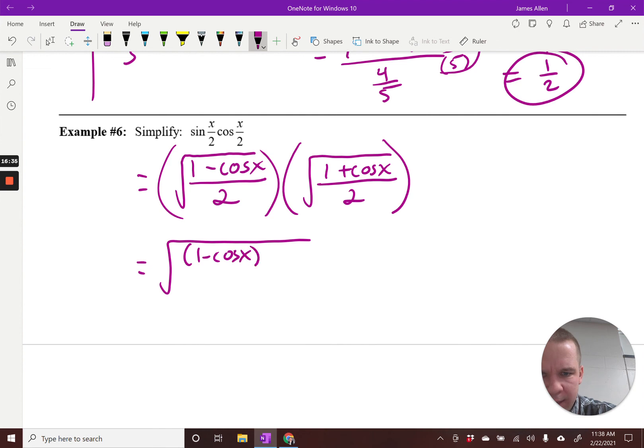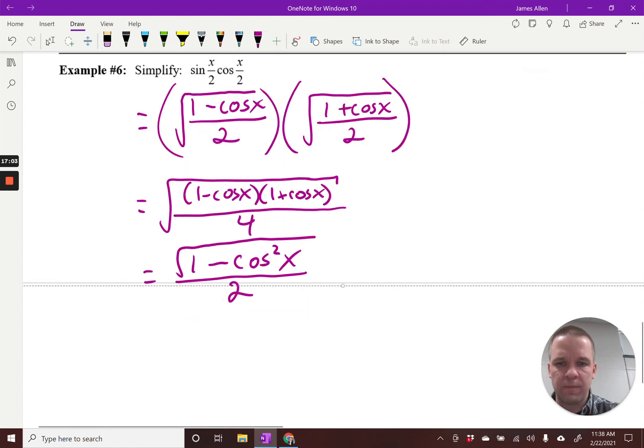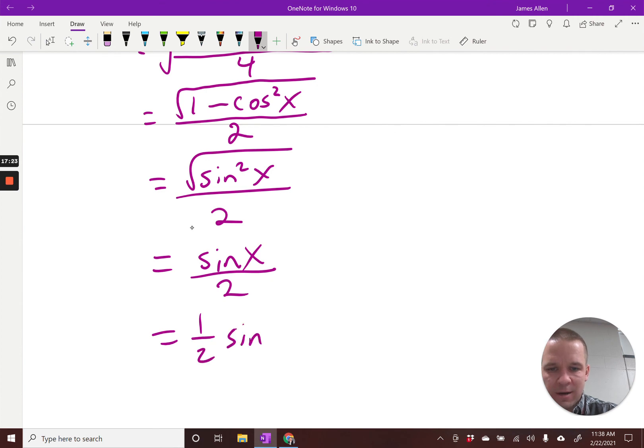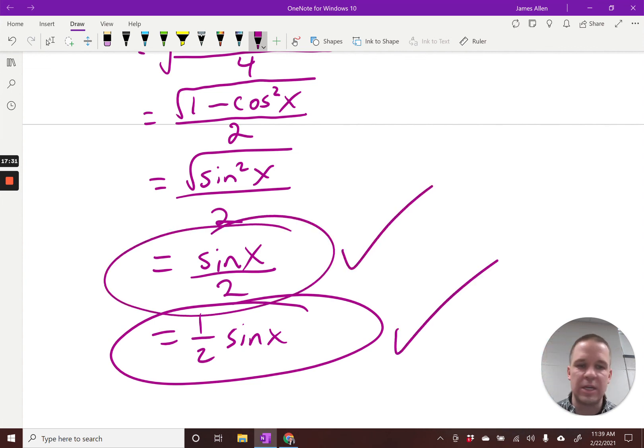I'd have 1 minus cosine of x, 1 plus cosine of x all over 4. Ooh, 4 is a perfect square, right? So, and I can also FOIL all this together. Let's do that. So I'd have 1, I'd have negative cosine of x and positive cosine of x. That would cancel, right? And I would just be left with that 1 minus cosine squared x over 2. The numerator is in the square root. Uh-oh, not uh-oh, I don't know why I said uh-oh. Oh yeah, would be a better one. 1 minus cosine squared x is sine squared x. Still in the square root, but I think you know what's about to happen. Sine of x over 2. Or you could write it as, if you so choose, 1 half sine of x. Either way is cool with me.